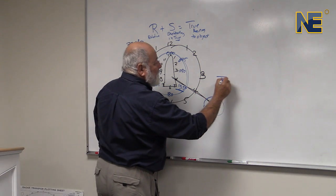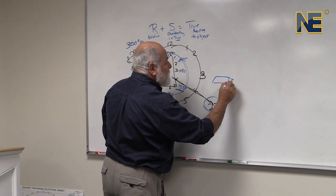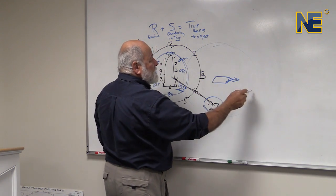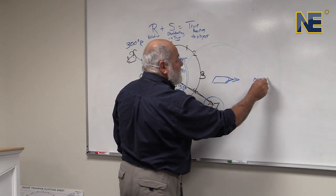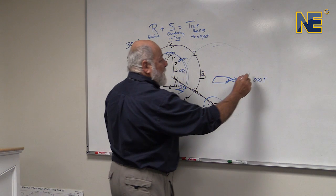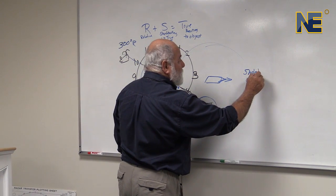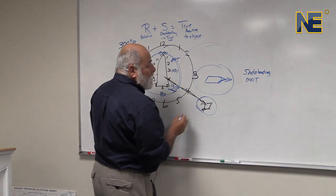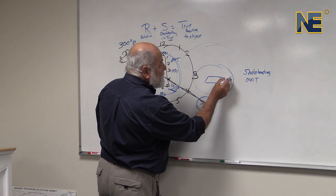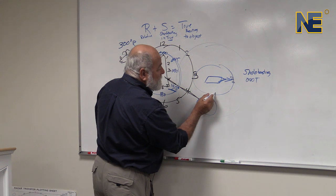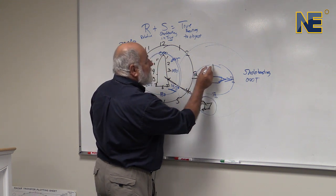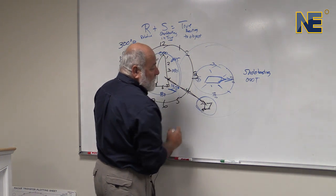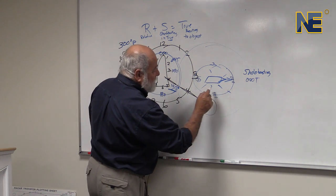Relative plus the ship's heading — and the ship's heading is always in true — gives us the true bearing to the object, whatever it might be. So let's take for example we're on a vessel sailing in this direction. Based on the true compass rose, we're sailing at 090 degrees true — that's our ship's heading. The relative bearings around the ship would then be 000, 090, 270, 180, filling in accordingly.